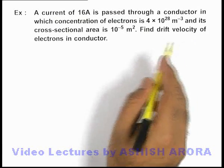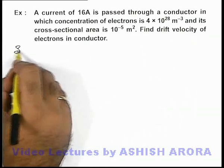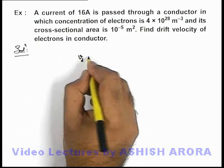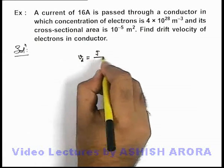Here we are required to find the drift velocity of electrons in the conductor. We know that the drift velocity of electrons in a conductor can be given as j over n e.